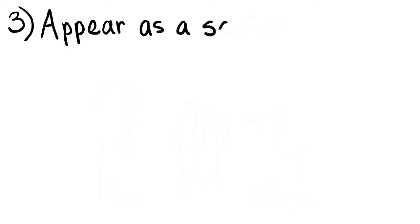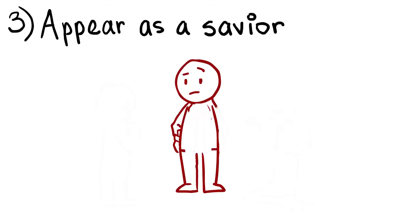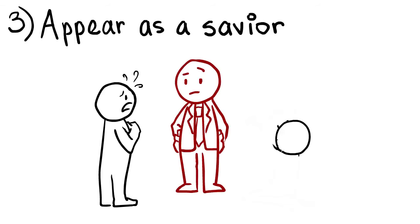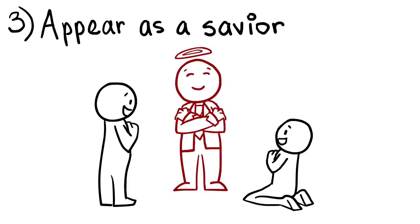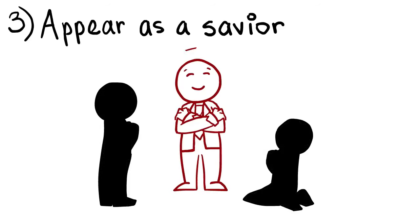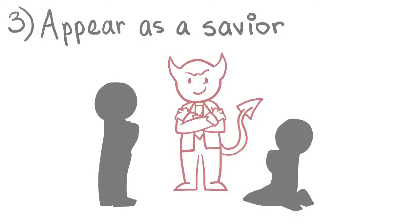3. Appear As A Savior. Sometimes, psychopaths watch you carefully to attack in a non-physical way. They will often come to you as a savior, pretending to have something you want or need. They will give them what they need, earn their trust, and then threaten to take it away in order to manipulate them.